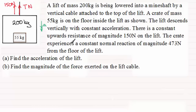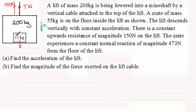The crate experiences a constant normal reaction of magnitude 473 newtons from the floor of the lift. We need to find the acceleration of the lift and also find the magnitude of the force exerted on the lift cable — that tension T. The total weight downwards is the weight of the lift, 200g newtons, plus the weight of the crate, 55g newtons, giving a total of 255g newtons.